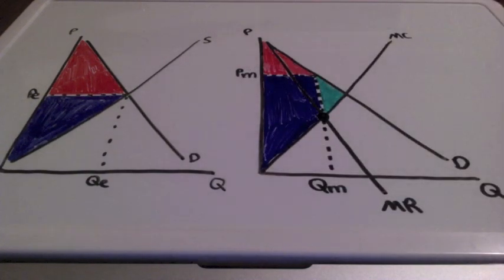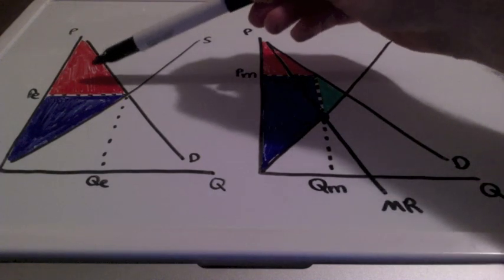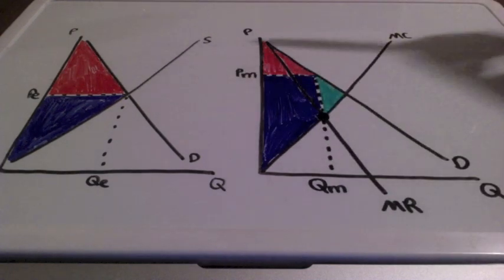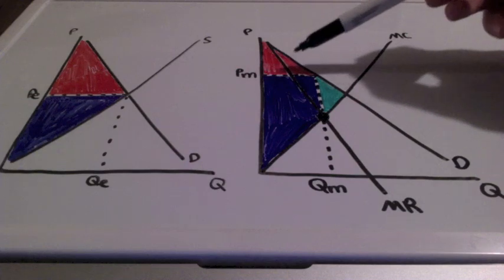The area in red represents consumer surplus, and the area in blue represents producer surplus. As you can see, consumer surplus is much larger for the perfectly competitive firm compared to the monopoly.